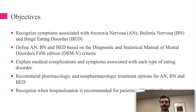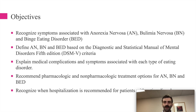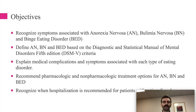The first objective is to recognize the symptoms associated with three specific eating disorders: anorexia nervosa, bulimia nervosa, and binge eating disorder. Then we will define the diagnostic criteria based on the DSM-5 — the Diagnostic and Statistical Manual of Mental Disorders, Fifth Edition — the most current edition used nationwide to diagnose mental health disorders. The third objective is to explain medical complications associated with each eating disorder. Then we will recommend pharmacologic and non-pharmacologic treatments, and finally recognize when hospitalization is recommended.